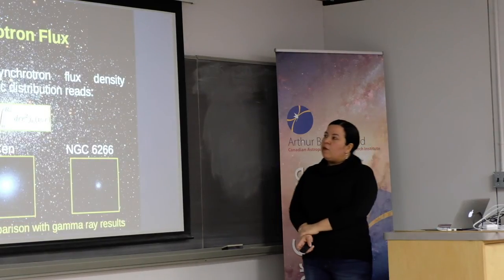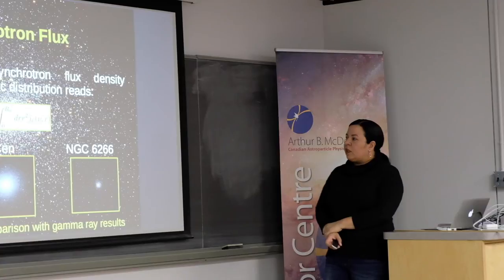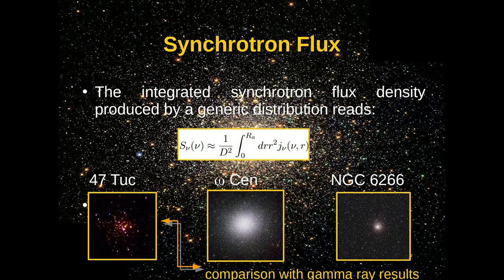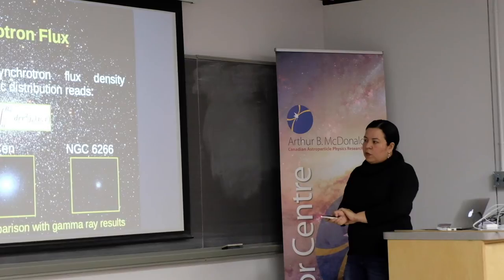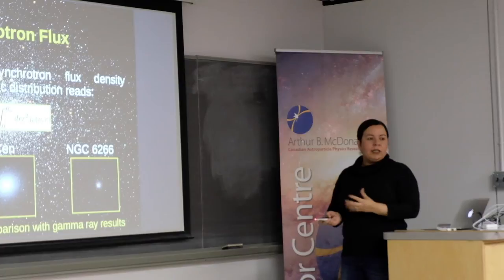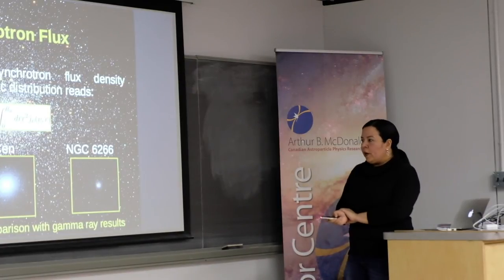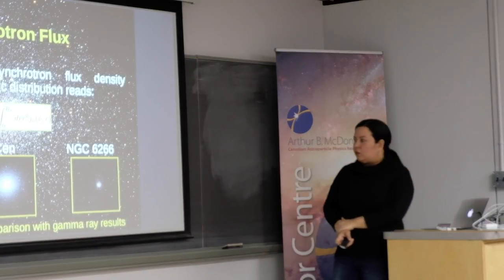Now we have complete information about the flux to be computed. The flux depends on the distance from the globular clusters to us and on the electron emissivity, which depends on the distribution of electrons and the synchrotron power. We calculate these fluxes for all three globular clusters. For 47 Tuc — the most studied, due to the hypothesis that dark matter is present — we compare these results with those used to constrain gamma ray hypotheses for dark matter.